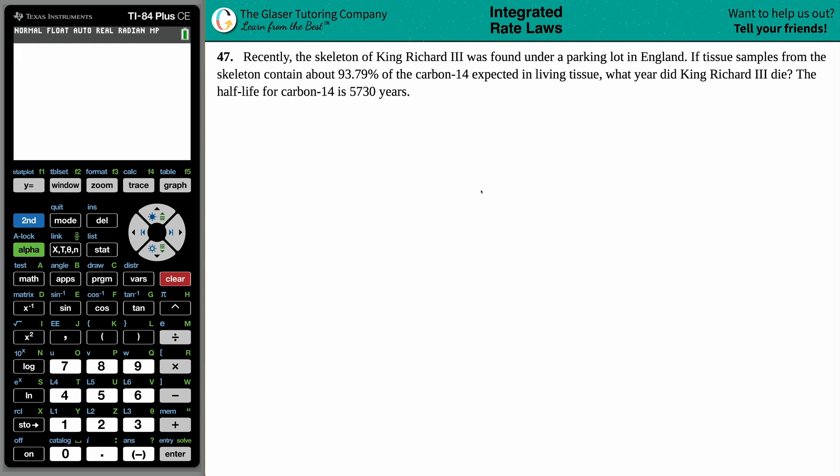Number 47. Recently, a skeleton of King Richard III was found under a parking lot in England. If tissue samples from the skeleton contained about 93.79% of the carbon-14 expected in living tissue, what year did King Richard III die? The half-life for carbon-14 is 5,730 years.